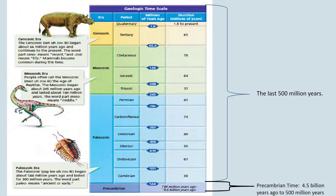The top of the geologic time scale is now; the bottom is billions of years ago. When we're talking about the geologic time scale, it follows the law of superposition: the oldest stuff is on the bottom, the youngest stuff is on the top.